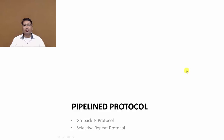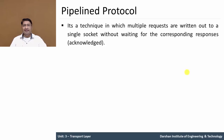In this video we will discuss about the pipeline protocol. In that we have two protocols: Go-Back-N protocol and Selective Repeat protocol. Pipeline protocol is a technique in which multiple data packets are sent to a single socket without waiting for a corresponding response or acknowledgement. The sender can send multiple packets without waiting for acknowledgement from the receiving side. Previously the sender could only send a single packet then wait for acknowledgement, known as stop-and-wait protocol. But in pipeline protocol the sender can send multiple packets without waiting for the corresponding acknowledgement.